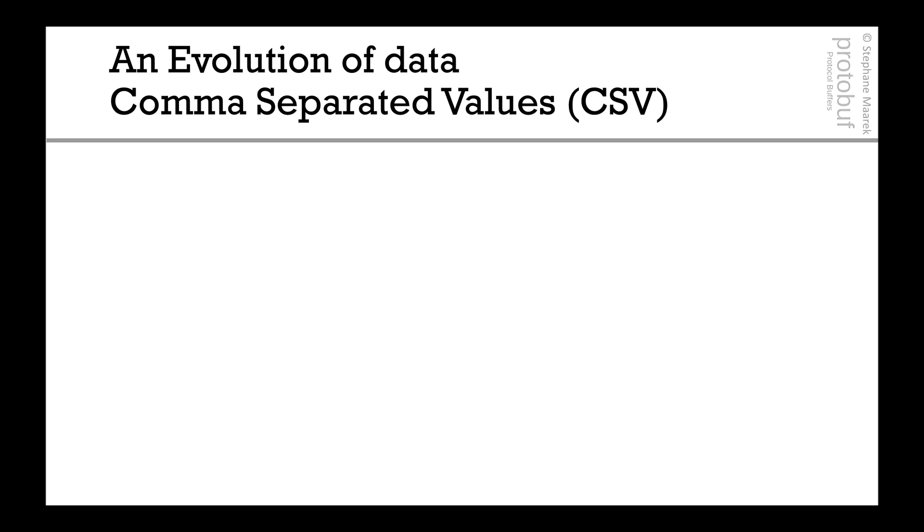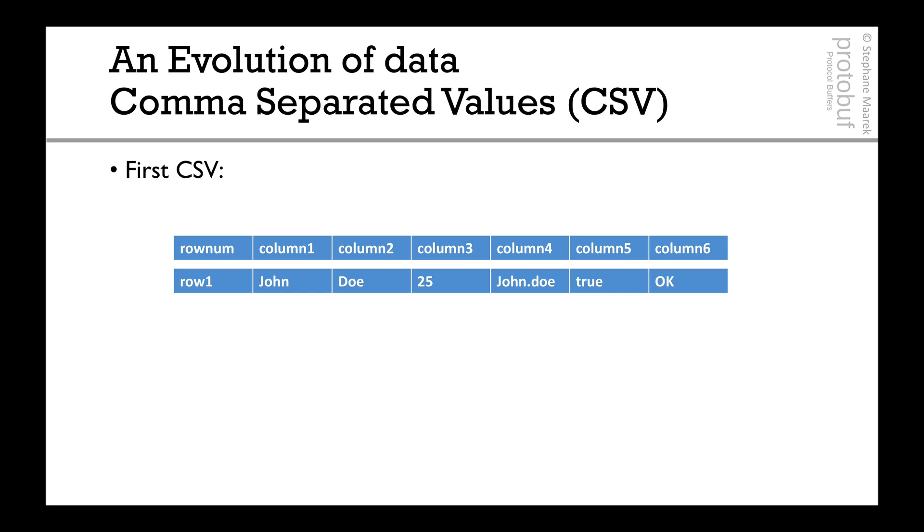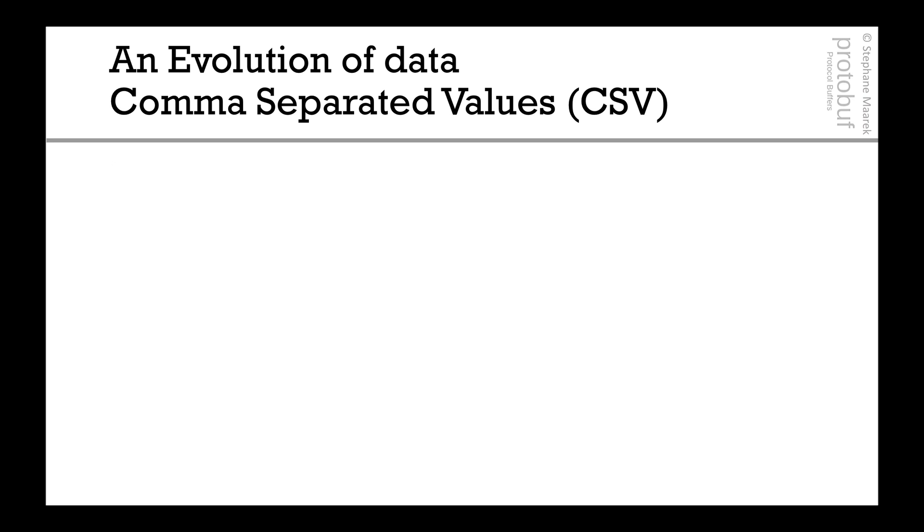So I want to tell you a story about the evolution of data and how protocol buffers came to be. First we started with CSV or Comma Separated Values. You have a header with rows and column names and then you have different columns: row number one, row number two, row number three, and so on.